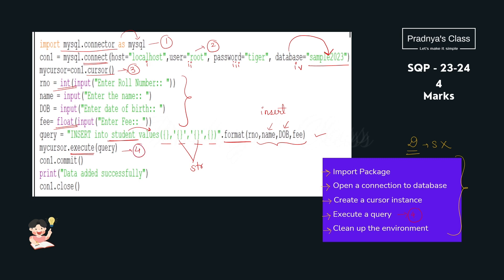After the query is designed, we execute it using the execute function — that step is complete. Whatever modifications we make, to apply them permanently to the table, we use the commit function. We also print a confirmation message. Now we reach the final step — we need to close the connection that we created. That is the last step. Hope this explanation was also clear.